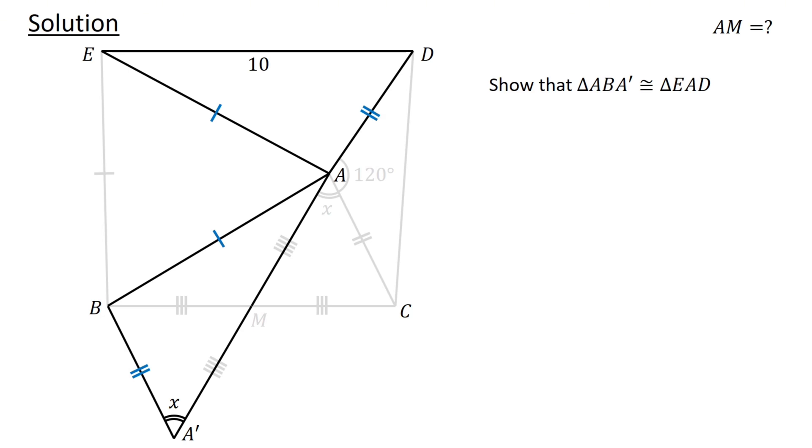To do this, consider triangle ABA'. Let's denote angle A'AB as Y. Next, let's express angle ABA', which is this angle, in terms of X and Y.